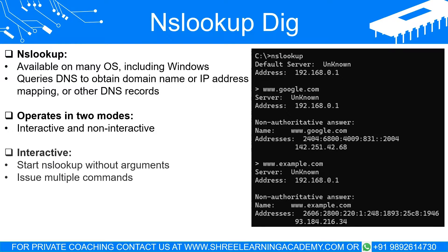In interactive mode, you start NSLOOKUP without any arguments and it waits for a command. For example, you type NSLOOKUP at your command prompt and it enters interactive mode, where you can run multiple commands sequentially. Suppose you wanted to look up the IP address for the domain name www.example.com — you would type NSLOOKUP at the command prompt and then type www.example.com at the NSLOOKUP prompt. The system will then return the IP address corresponding to that domain name.